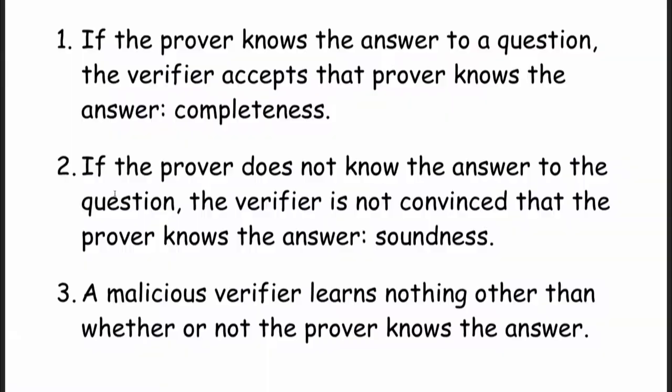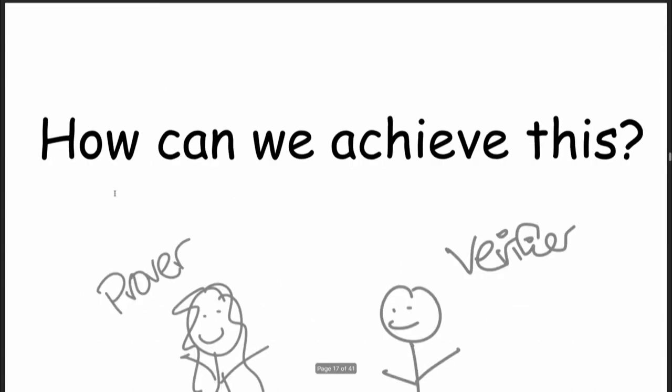Property number three: the malicious verifier learns nothing other than whether or not the prover knows the answer. This is zero-knowledge-ness. They just learn the bit — either they know or they don't.